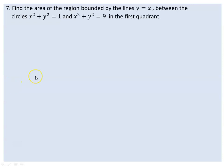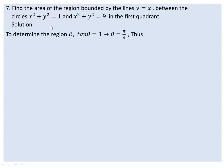So how is this obtained? The solution is going to be obtained from the intersection point. To determine the region R, first you have to determine the intersection point of the line and the circles. For that, the slope of the line is positive 1.